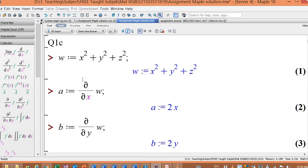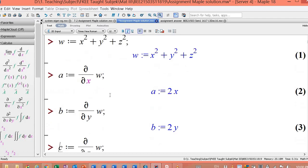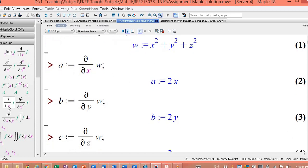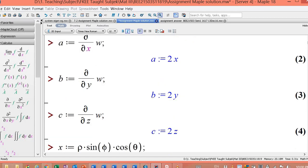So a, colon equal. How to get this button is here. Del del x, f, then change the f to w. So b is del w del y. In the same button, just x, I change it to y, f, change it to w. Then c is actually del w del z. From this button, x I change to z, f I change to w.